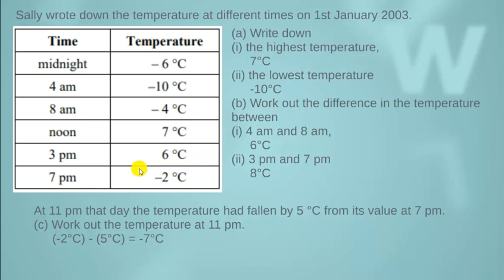Here we have another question. Sally wrote down the temperature at different times on 1st January 2003. We are having two columns: one is time and the other is temperature. In the time column we are having midnight, 4 a.m., 8 a.m., noon, 3 p.m., and 7 p.m., and the temperatures are minus 6 degrees centigrade, minus 10 degrees centigrade, and so on. We need to find the highest temperature. The most greatest positive number is 7 degrees centigrade, so 7 degrees centigrade will be the highest temperature.